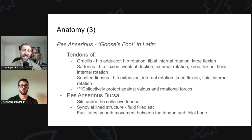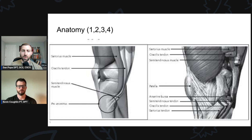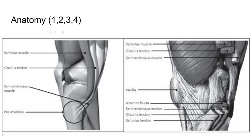A little information about the pes anserine bursa. It sits right underneath the collective tendon — it's a synovial-lined, fluid-filled sac. Generally it's not filled with much fluid, but in pes anserine bursitis it can fill up with fluid visible on MRI. It's supposed to facilitate smooth movement between the tendon and the tibial bone. Apologies to podcast listeners — hop over to YouTube to check out the anatomy image.